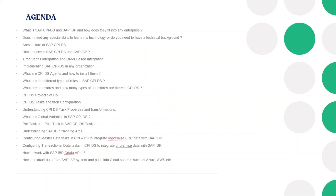Then we'll cover what CPI DS agents are — which are essentially the brain of the entire architecture — and how we install the agents. After that, if you have to give some access to a user in CPI DS, we'll look at the different types of roles which are available and what level of access you can assign to anyone in CPI DS.